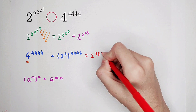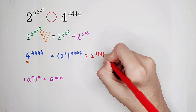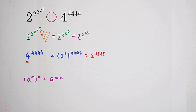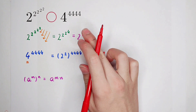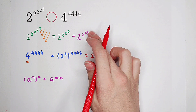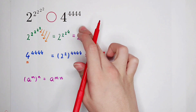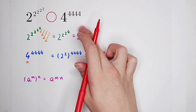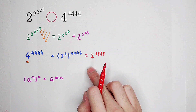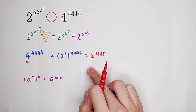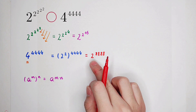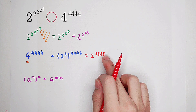So it equals 2 to the power of 2 times 4,444, which is 8,888. The left-hand side equals 2 to the power of 2 to the power of 16, and the right-hand side has been changed into 2 to the power of 8,888.